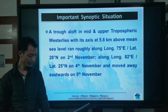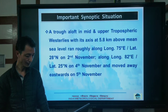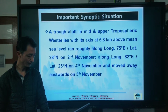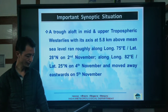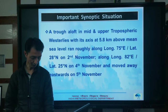A trough in mid and upper tropospheric westerlies with its axis at 5.8 km above mean sea level ran roughly along longitude 75 degrees east and latitude 28 degrees north on 2nd November, along latitude 25 degrees north on 4th November, and moved away eastwards on 5th November.